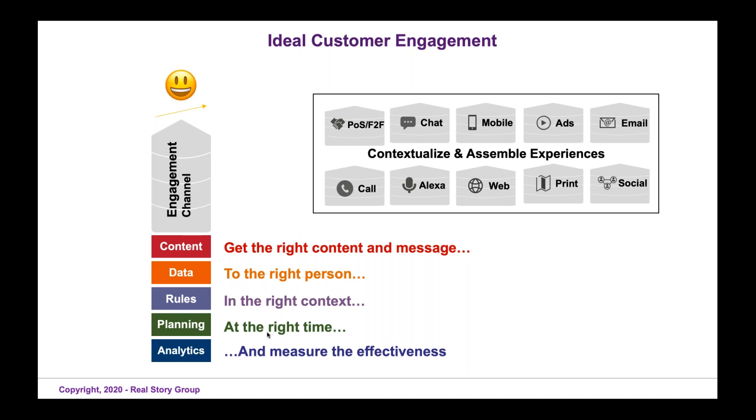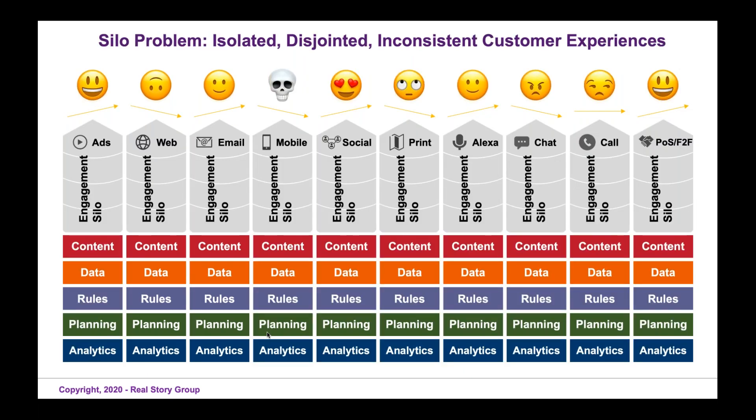What often happens is you have these silos that each have their own content, data, rules, and planning. And from a customer perspective, when you start thinking about this from the customer in as opposed to from the enterprise out, you often find that customers have isolated, disjointed, or inconsistent experiences as they traverse and engage with you across these different channels. I think this is on everyone's agenda for this year — and for this decade — to resolve this and develop a more customer-centric engagement strategy and stack.